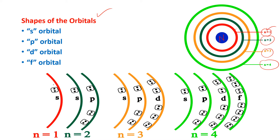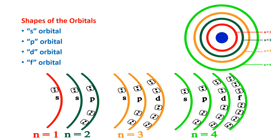Each and every shell has subshells. The n=1 shell has 1 subshell. n=2 has 2 subshells: s and p. n=3 has 3 subshells: s, p, and d. n=4 has 4 subshells: s, p, d, and f. Each and every subshell has orbitals — s has 1, p has 3, d has 5, and f has 7.